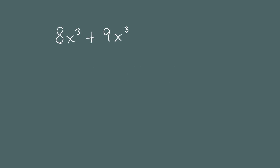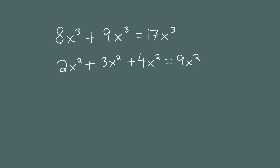Next, I'm going to show you an algebraic expression, and you have to decide how you can simplify it — that is, can you combine the terms together? 8x cubed plus 9x cubed — yes, these are like terms, and their sum is 17x cubed. 2x squared plus 3x squared plus 4x squared — all three of these terms are like terms, so if you add them together you get 9x squared.